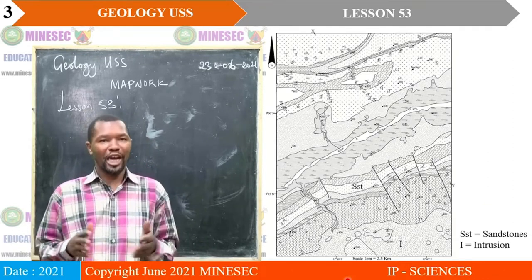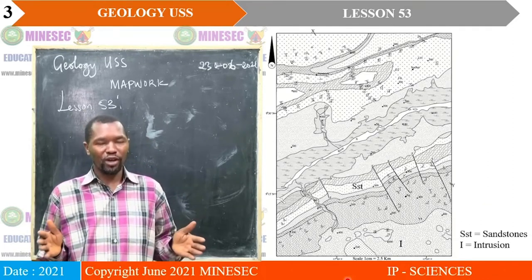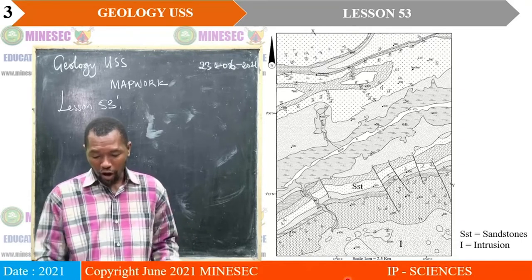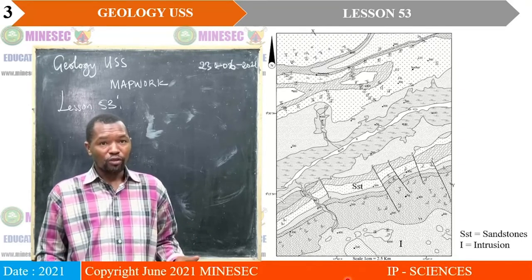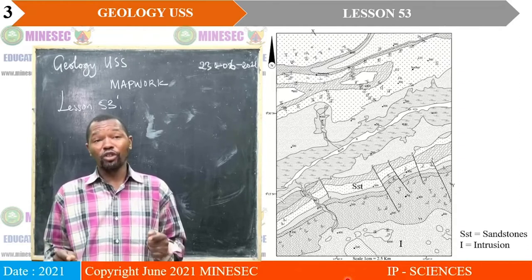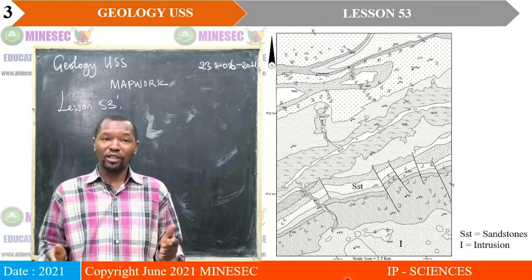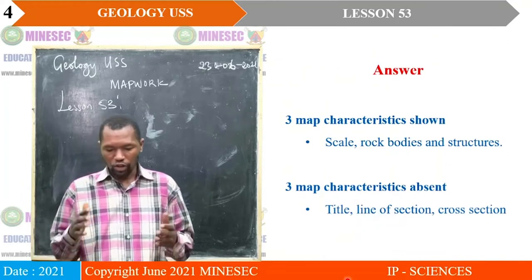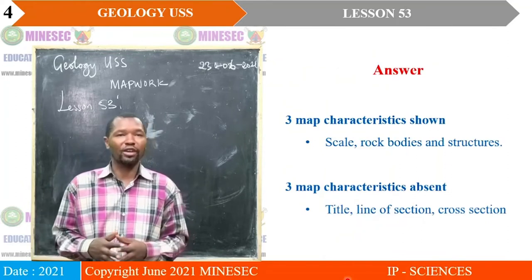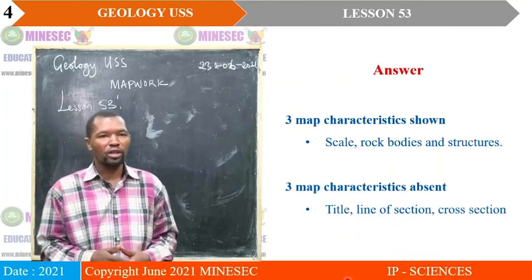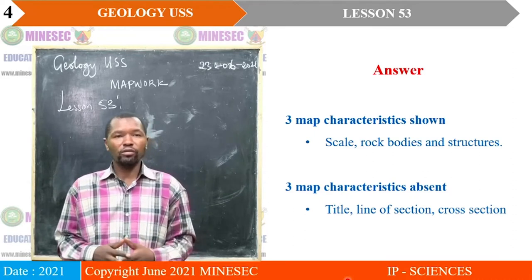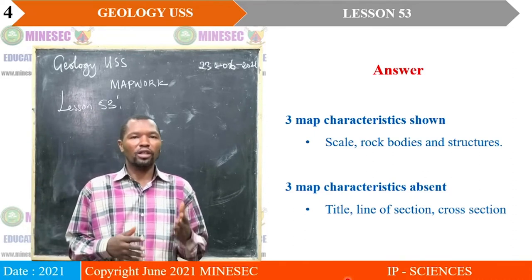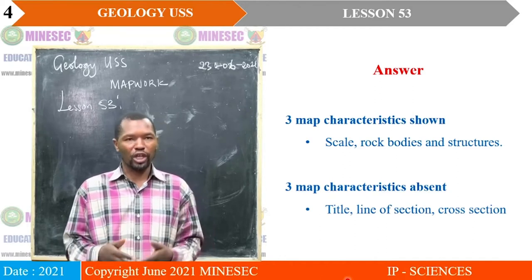The essential characteristics that are not shown on the map include the fact that this map lacks a title — very important. Also, there is no line of section. We cannot see a line of section, and if there is no line of section, then there is no cross section. So the three characteristics that are absent include no title, no line of section, and no cross section.